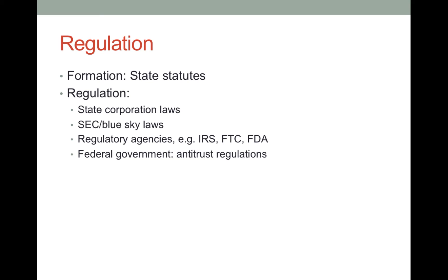Another big area of regulation is antitrust. Both federal and often state regulators have laws relating to antitrust, limiting businesses' ability to set prices and restrict competition. The states and the federal government want unlimited competition; therefore they will have laws to limit monopolies, because monopolies increase price and reduce choice. You're not responsible for any of these particular laws — I'm simply telling you that this is the environment in which corporations operate.